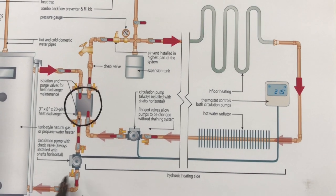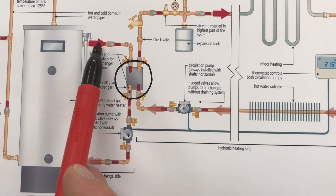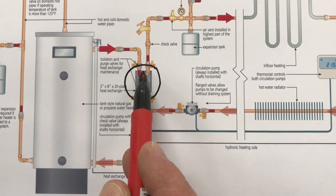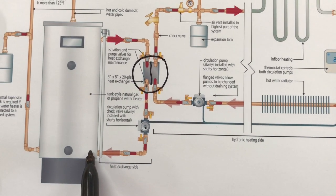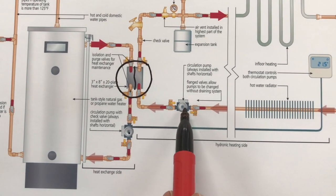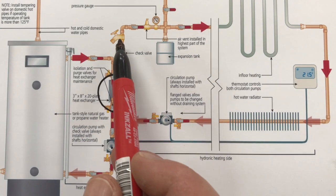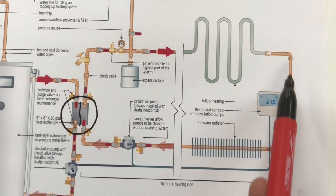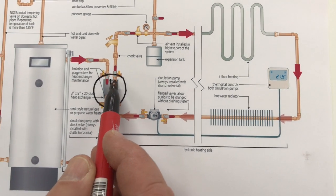It triggers the circulator pump here which circulates the hot water off the top of the tank down through the one side of this heat exchanger and then back into the tank at the bottom. Now the second circulator pump is also triggered and it circulates the hydronic heating water through the house, back through and on the other side of the heat exchanger.